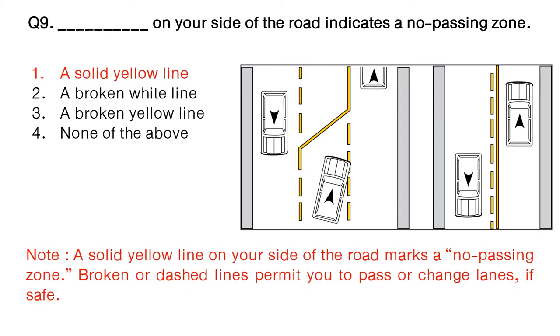Note: a solid yellow line on your side of the road marks a no passing zone. Broken or dashed lines permit you to pass or change lanes, if safe.